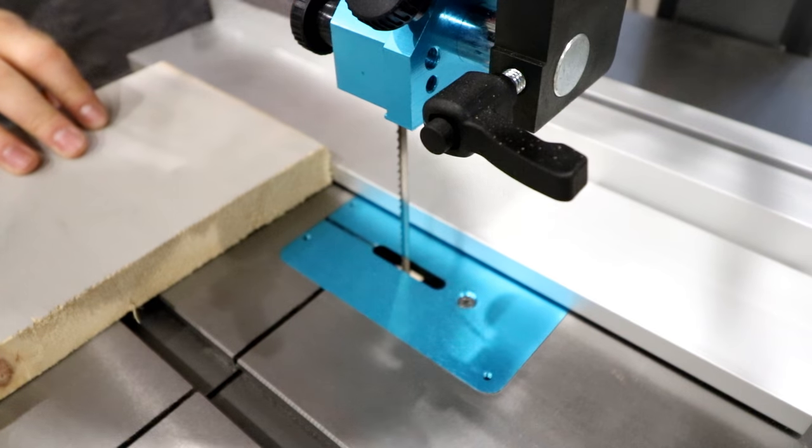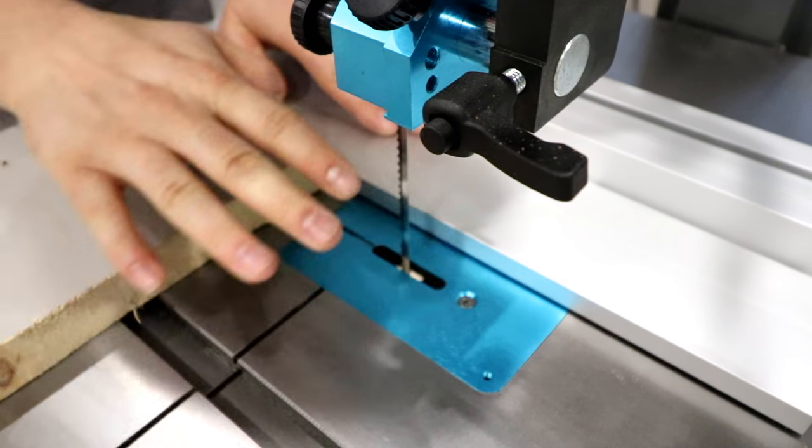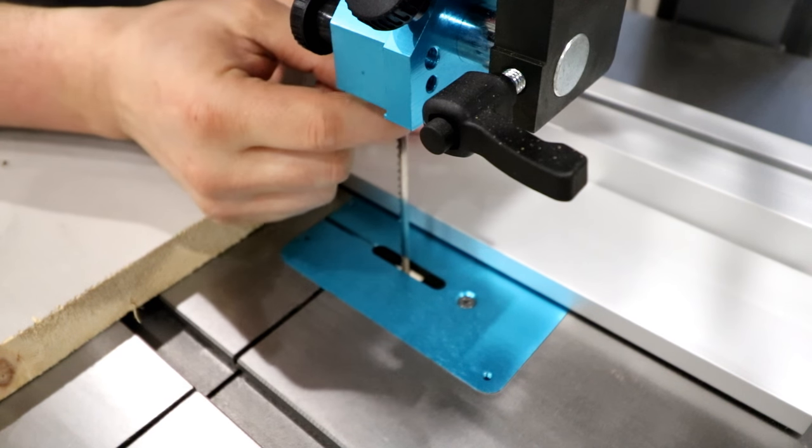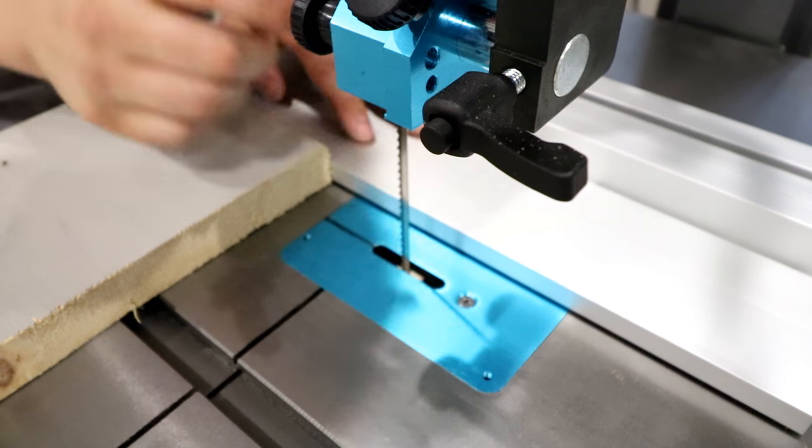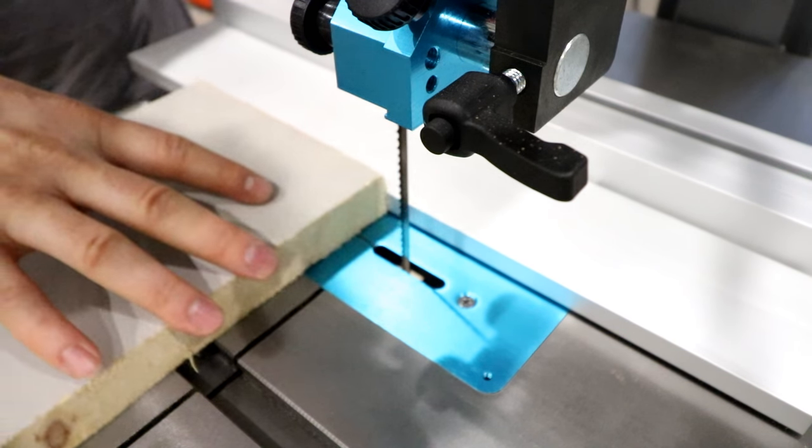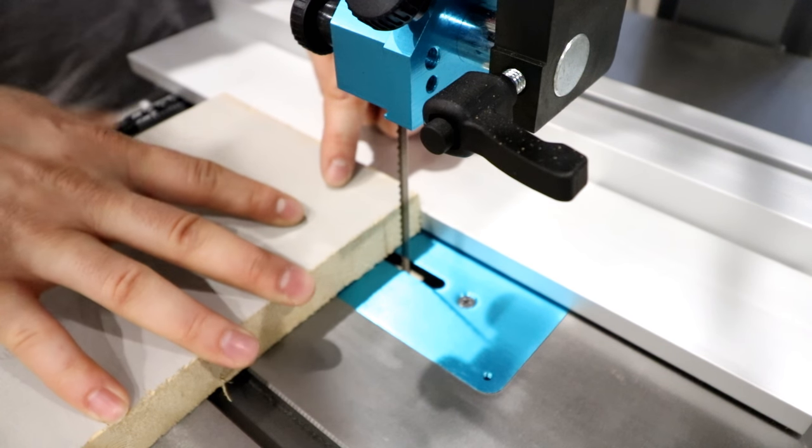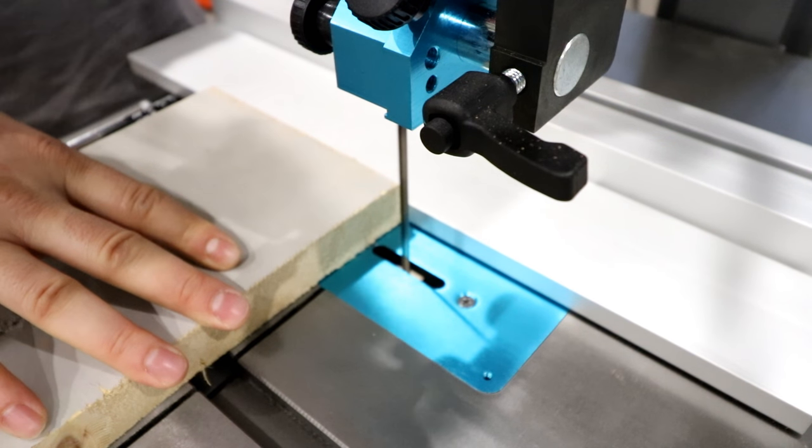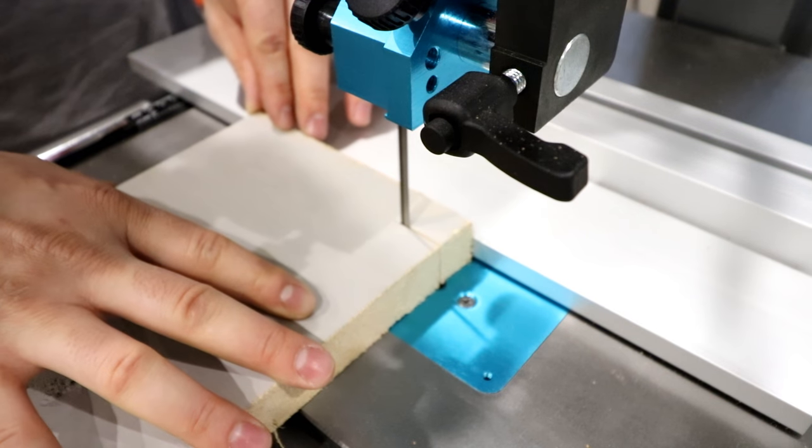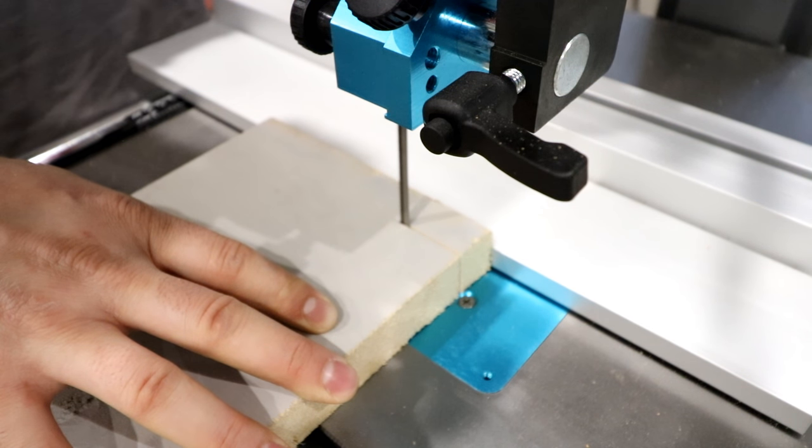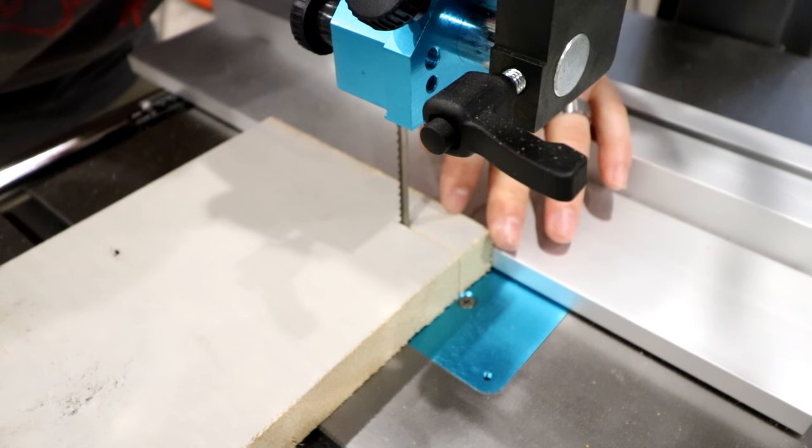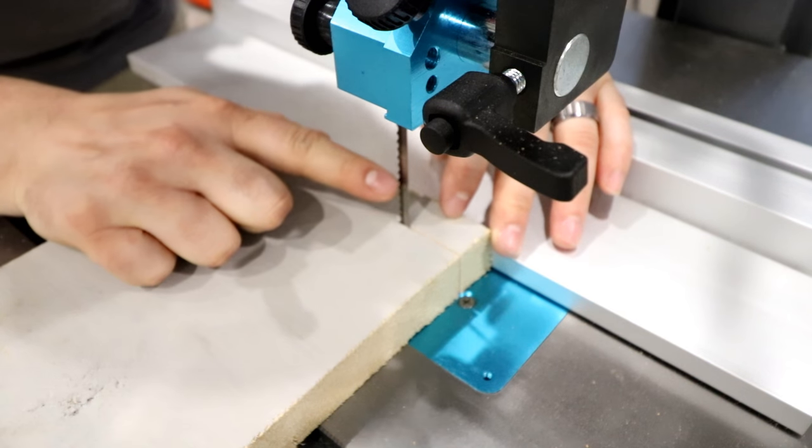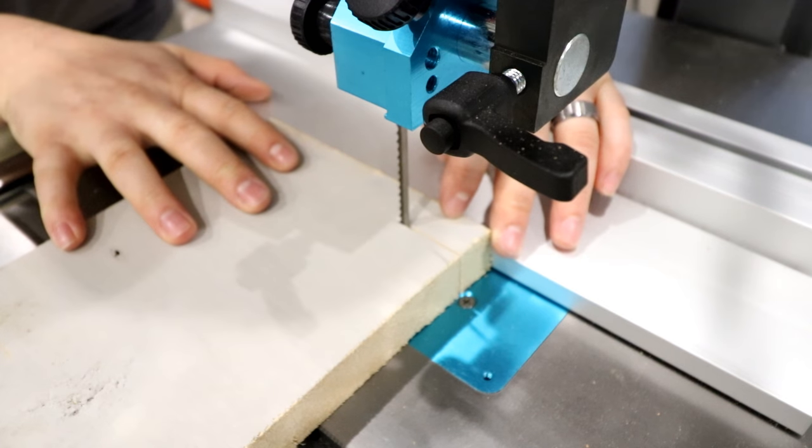In order to check the fence being square to the blade, we square the table, we need to check the fence is now parallel to the blade. This blade is exceptionally thin which makes this very challenging. What we're going to do is we're going to cut into here an inch or so and we're going to see if the blade is touching the back on one side or the other. It appears to me that at least with this small thin blade that the fence is pretty square to the blade itself.